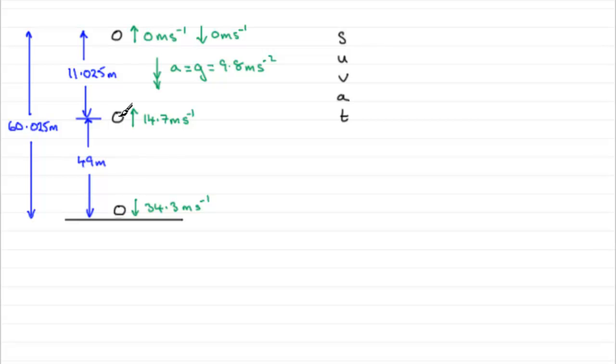Now, we need to set up our positive direction and I would always set it up in the direction of the initial velocity. So we've got it going upwards initially, so for the SUVAT equations I'm going to have upwards as positive.